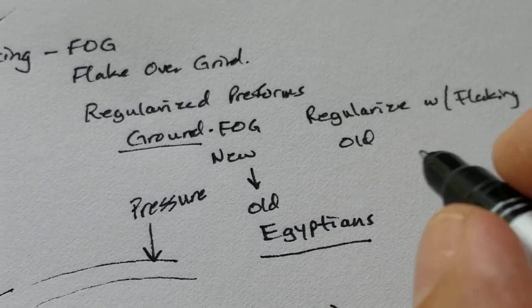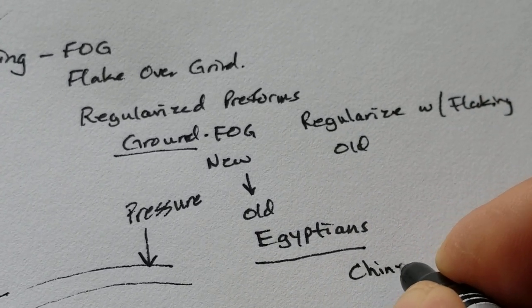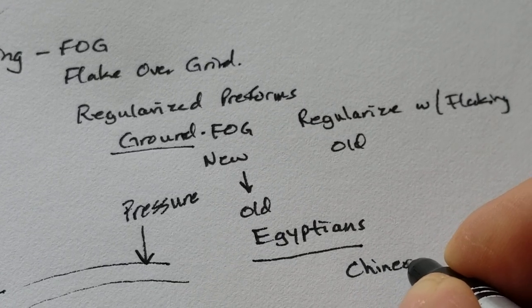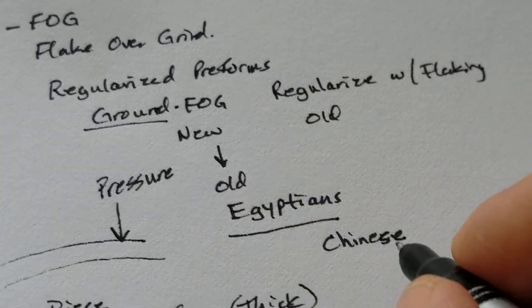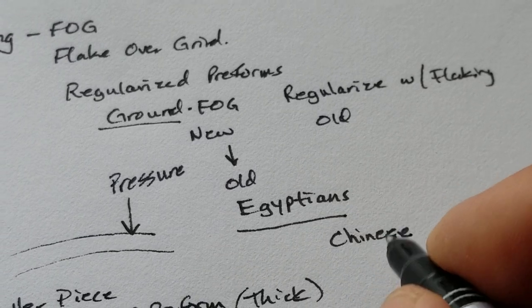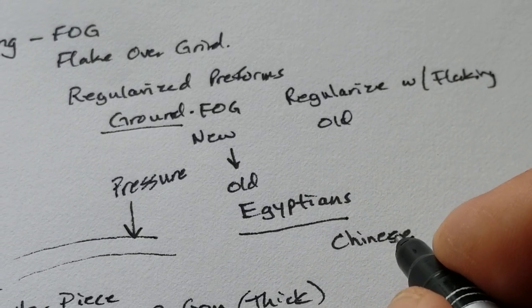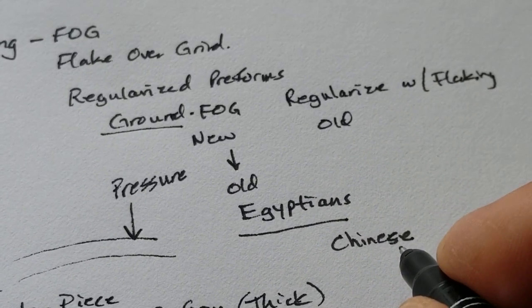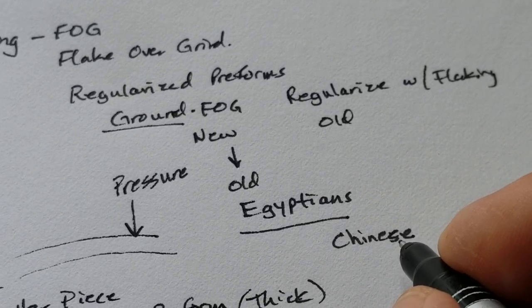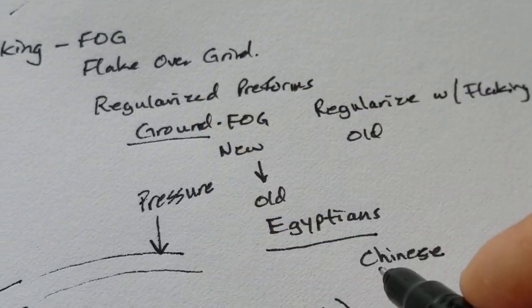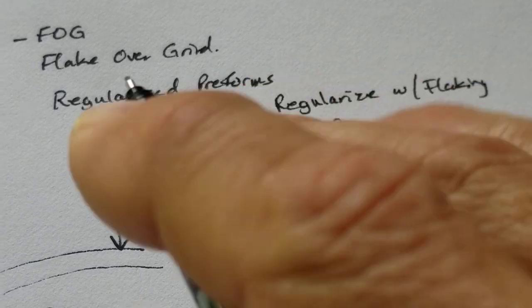There's also Chinese arrowheads that I've seen that also have a combination of grinding and flaking. Okay, so those are two exceptions that I can see off the top of my head for flake-over-grind done in the old days with the old ways.